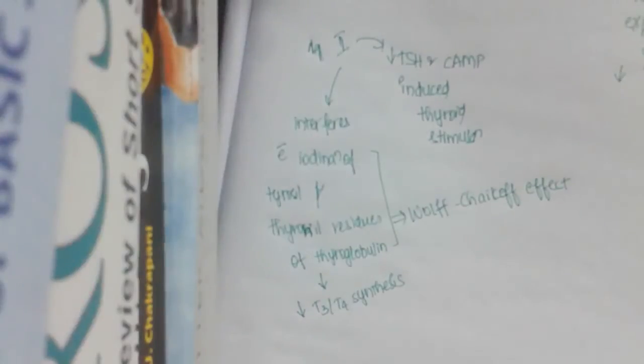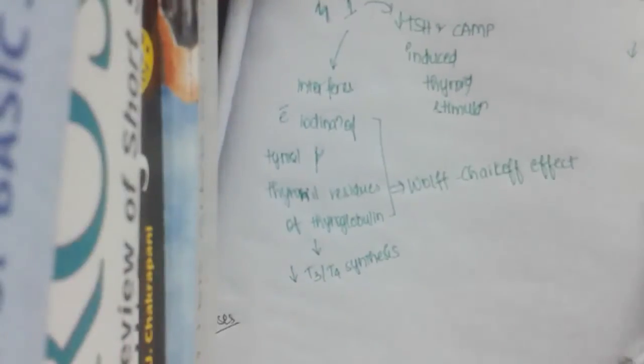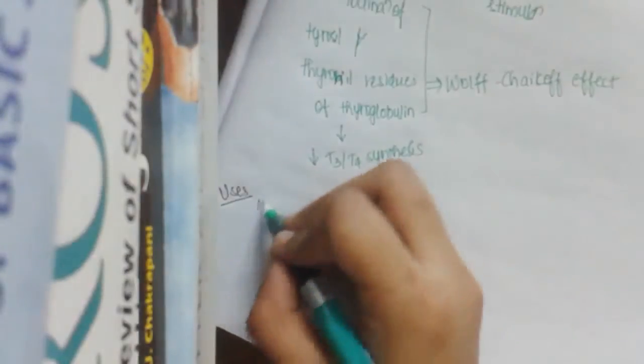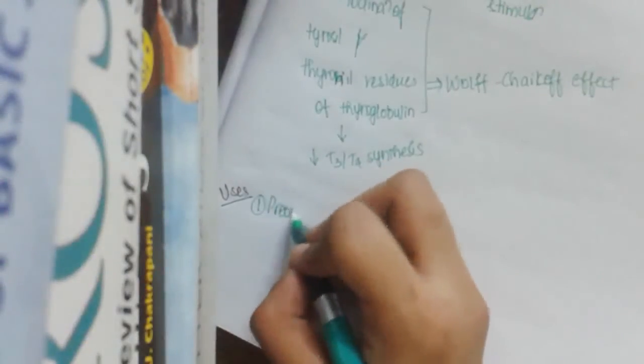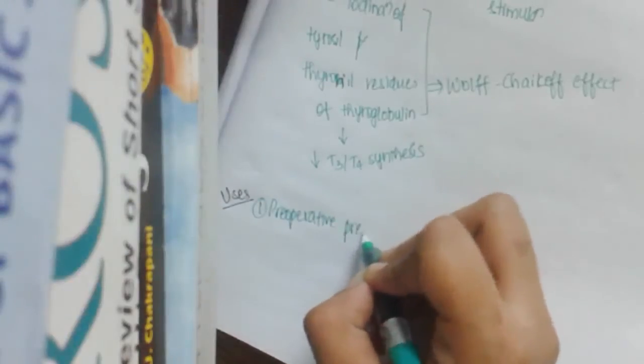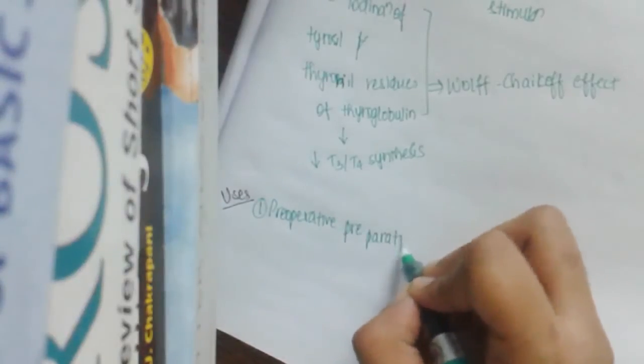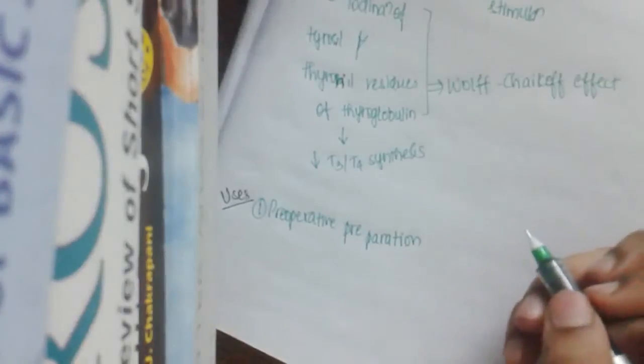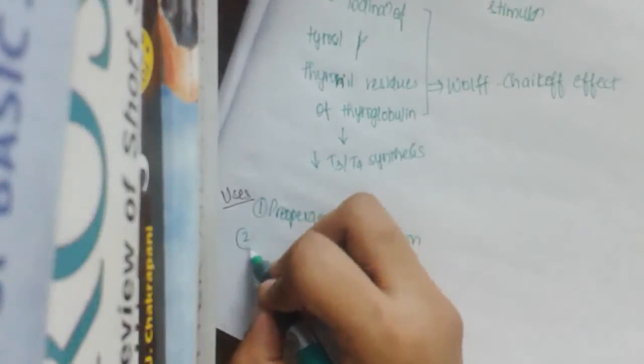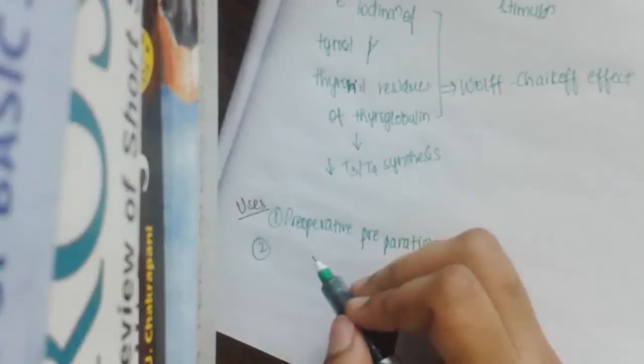What are the uses of iodine or iodides? One is in preoperative preparation, in thyroidectomy for Graves disease. This iodine is mostly given 10 days before surgery so that it lowers the thyroid status and brings it to euthyroidism, making surgery easier.